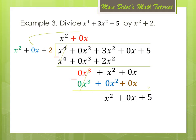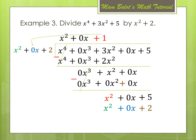Divide x squared by x squared to get 1. Multiply 1 by the divisor: 1 times x squared is x squared, 1 times 0x is 0x, and 1 times 2 is 2. Subtracting: x squared minus x squared cancels, 0x minus 0x cancels, and 5 minus 2 equals 3. The quotient is x squared plus 0x plus 1, or simply x squared plus 1 since 0x has no value. The remainder is 3.